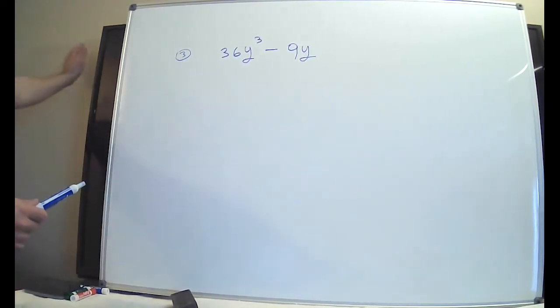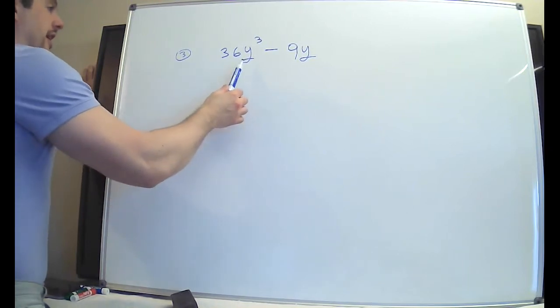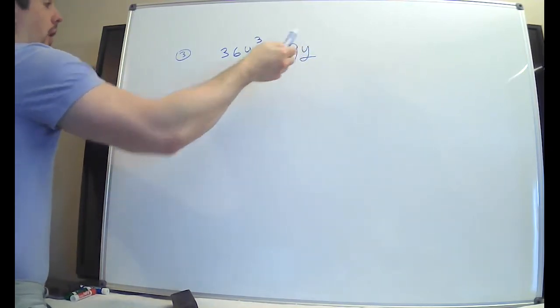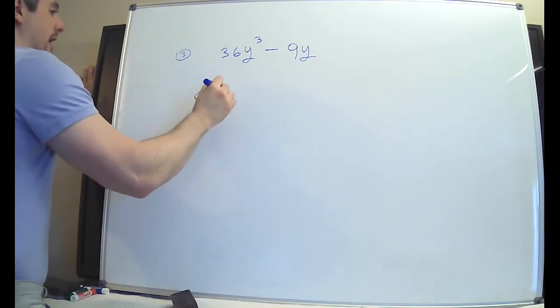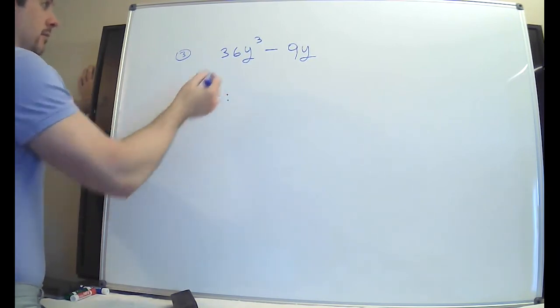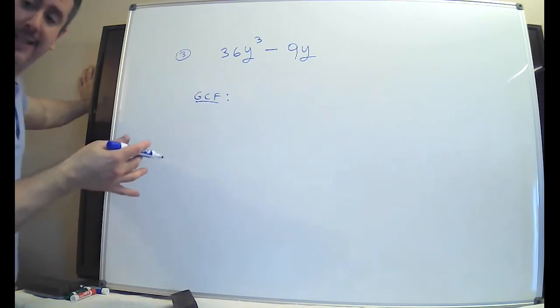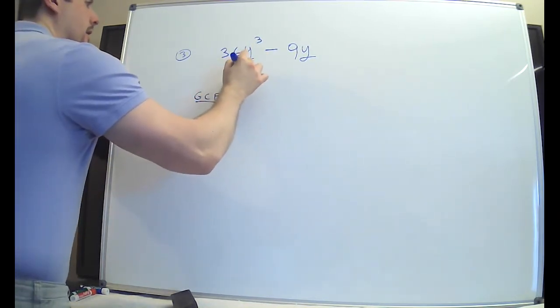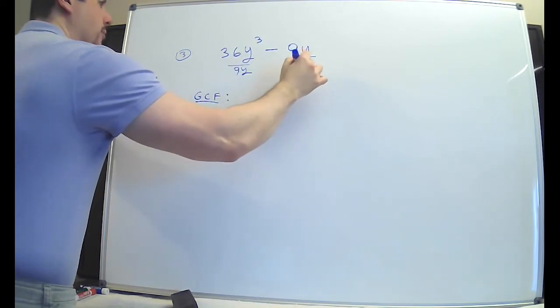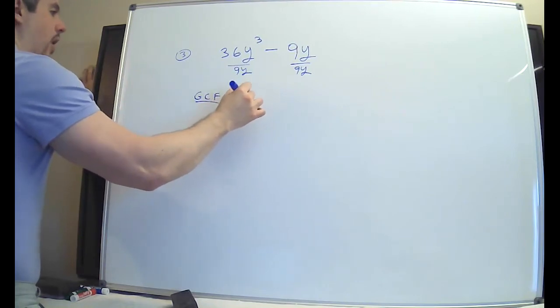Number three, probably the trickiest one that was there. Because it's easy to spot that they have a y in common, right? I mean, y to the first. But what is harder to spot is that 36 and 9 are both divisible by the same number. Now, you could divide them by 3. But that's the problem. That's not the greatest. So the greatest common factor here is going to be a 9y. And it really helps you to see what happens when you do this. Because a lot of you made a mistake when you were writing it.